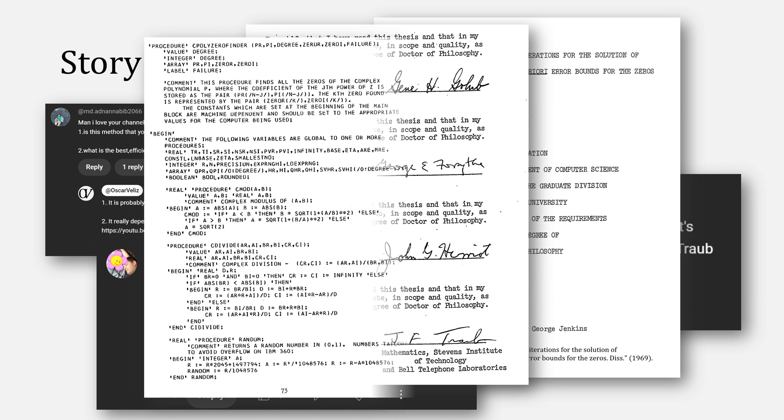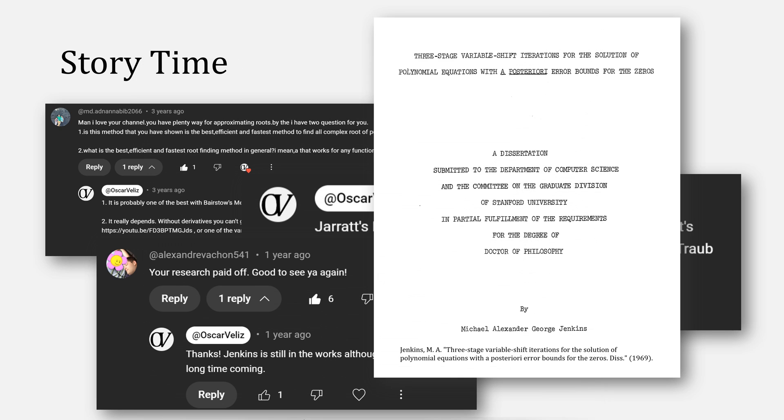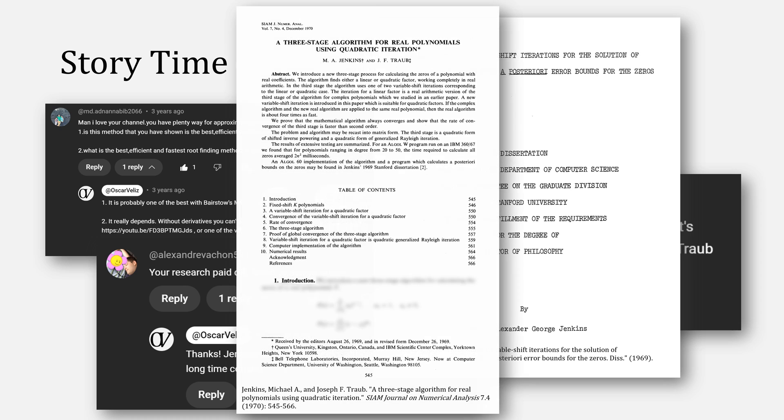In his dissertation, Jenkins provides Algol code for this method, which ended up being known as Cpoly. There's also another method he describes for when the coefficients were all real, later published in this paper, a three-stage algorithm for real polynomials using quadratic iteration, which became known as RPoly. If that is a video that you want me to make, let me know in the comments below.